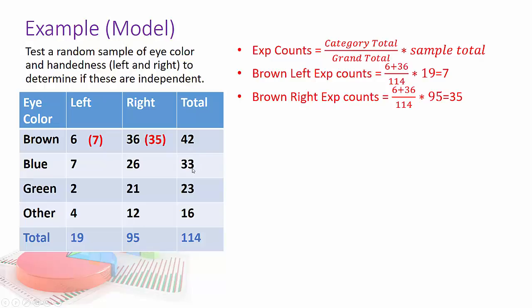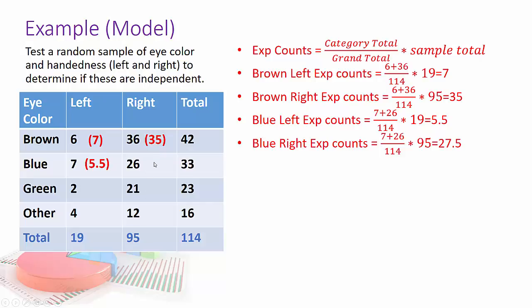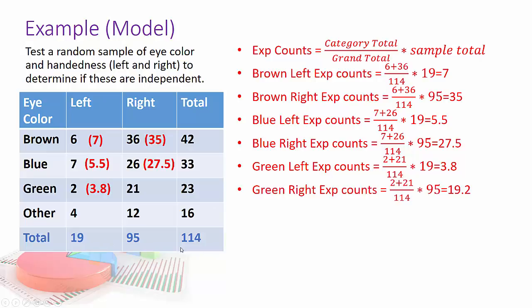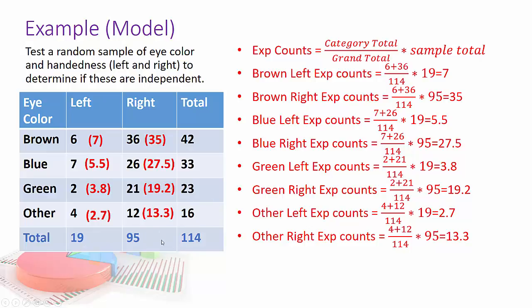So now my category total is going to be 33 for blue eyes, 7 plus 26. And for this column, I'm using the sample total of 19, and I get 5.5. For this one, I'll use 95, and I get 27.5. For green, the 23 over 114 times 19 gives me 3.8. Then I go 23 over 114 times 95, that gives me 19.2. 16 divided by 114 times 19 gives me 2.7. 16 divided by 114 times 95 gives me 13.3.